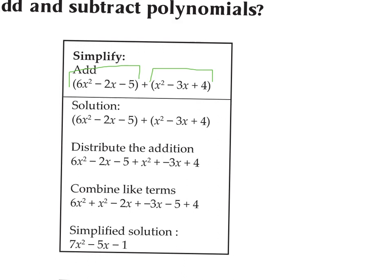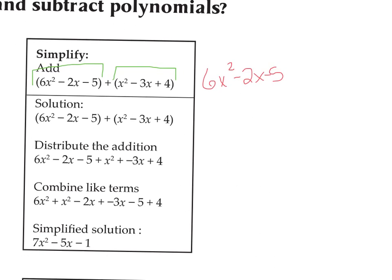You can see that's what the author has written, but I'm going to do it again over here. So we're just going to drop the parentheses. We have 6x² minus 2x minus 5 from the first trinomial, added to x² minus 3x plus 4 from the second trinomial. We're going to look for the like terms in descending order — starting with the terms with the highest exponent first. That would be 6x² plus 1x². We add the coefficients; the variables and exponents stay the same. So 6x² plus 1x² makes 7x².